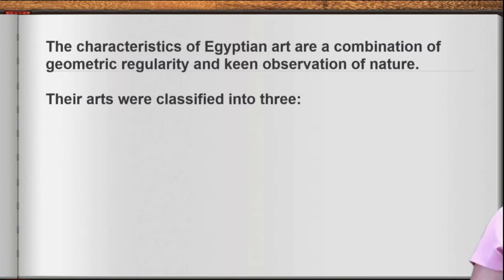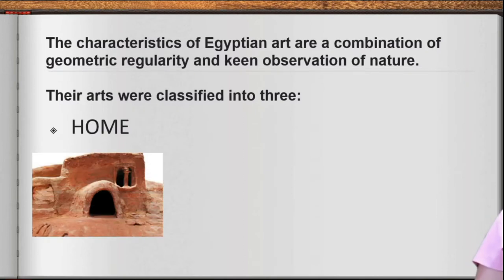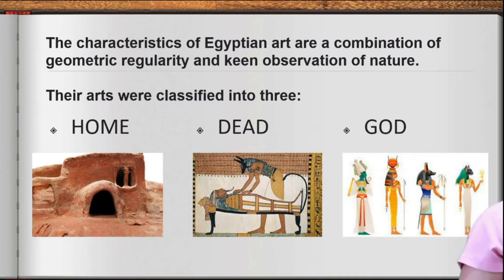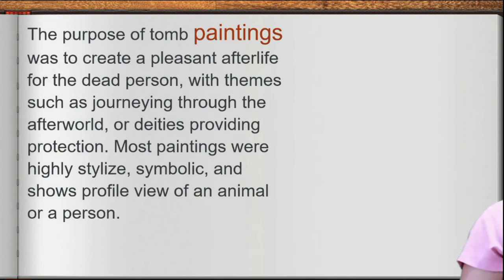Egyptian arts were classified into three categories. First, art used in the home — furniture, jewelry, musical instruments, and more. Second, art used in the homes of the dead — mummy cases and wrappings for the body. Third, art created for gods and their temples, and kings and their palaces — paintings and reliefs. The purpose of tomb painting was to create a pleasant afterlife for the dead person, with themes such as journeying through the afterworld or deities providing protection.